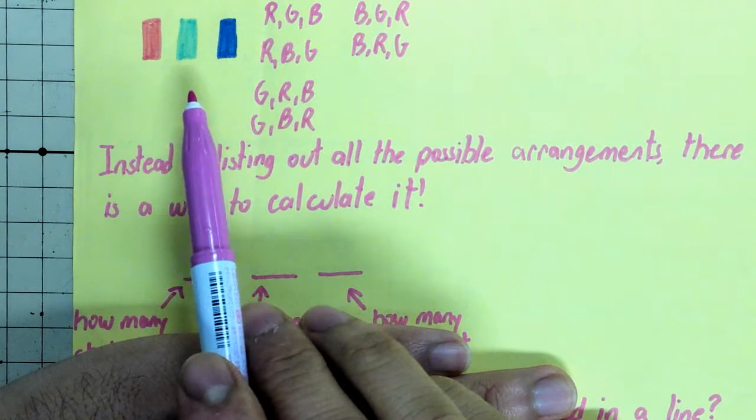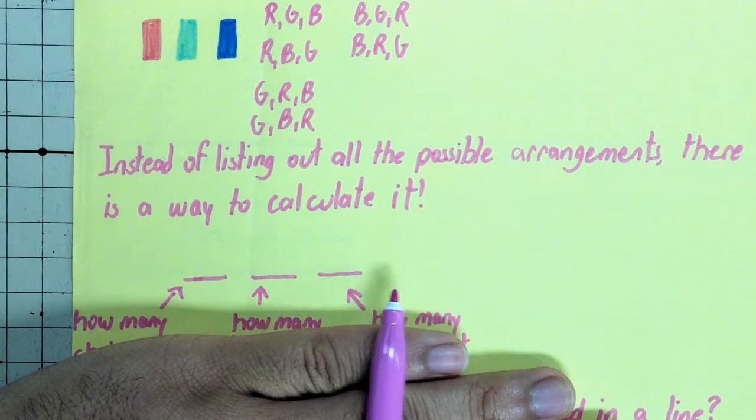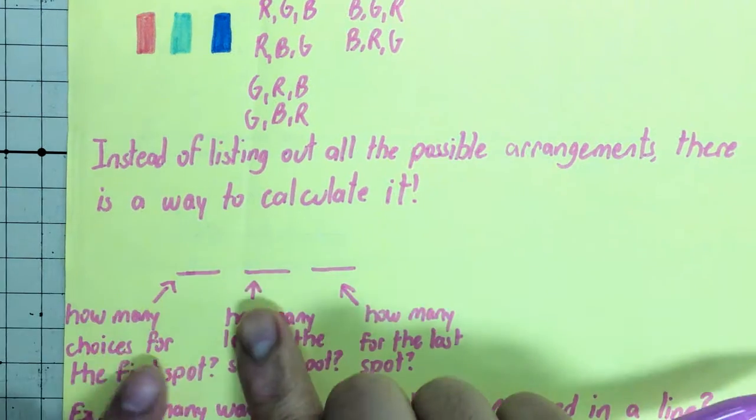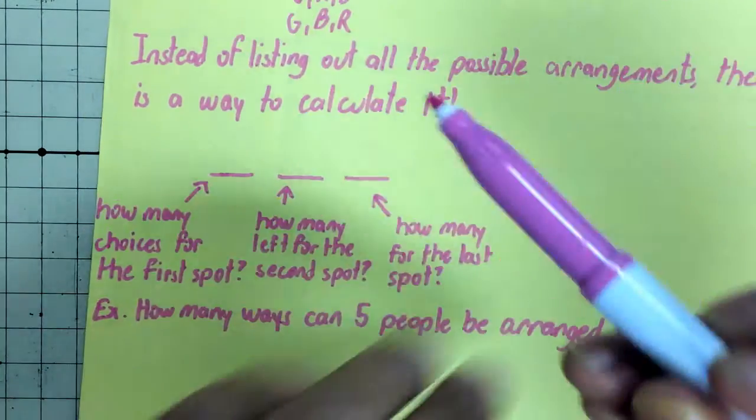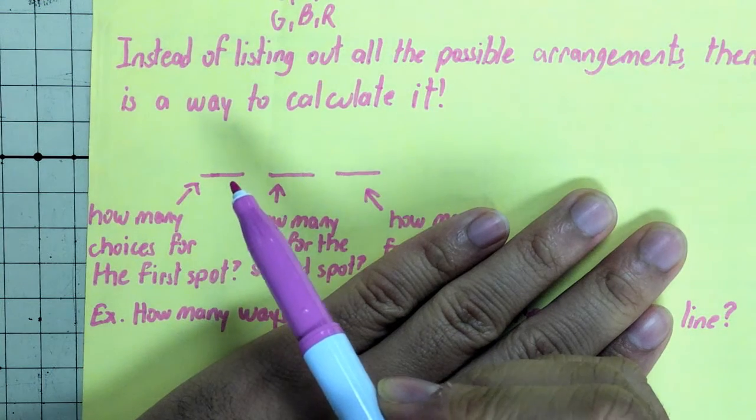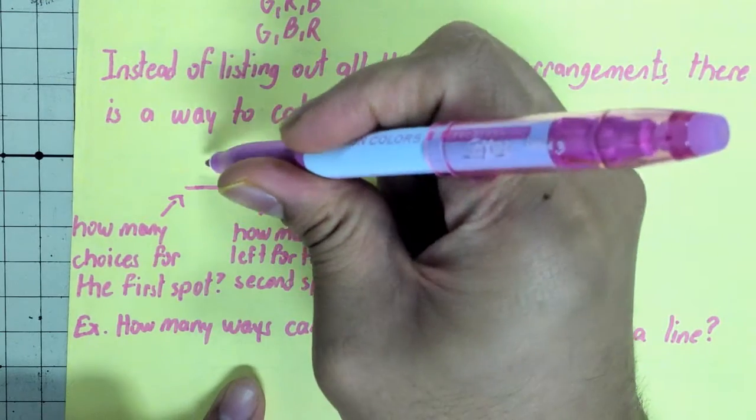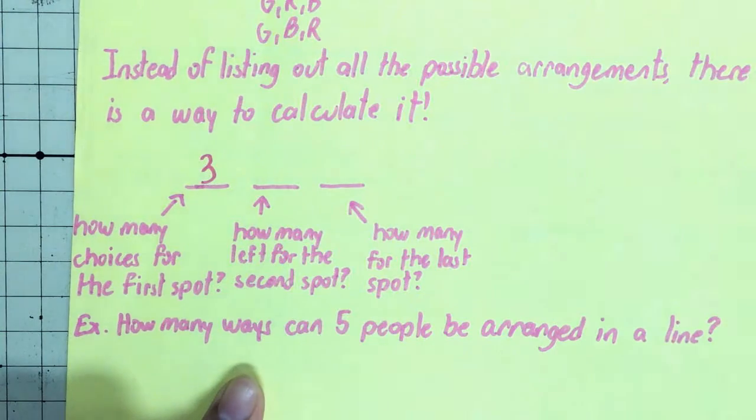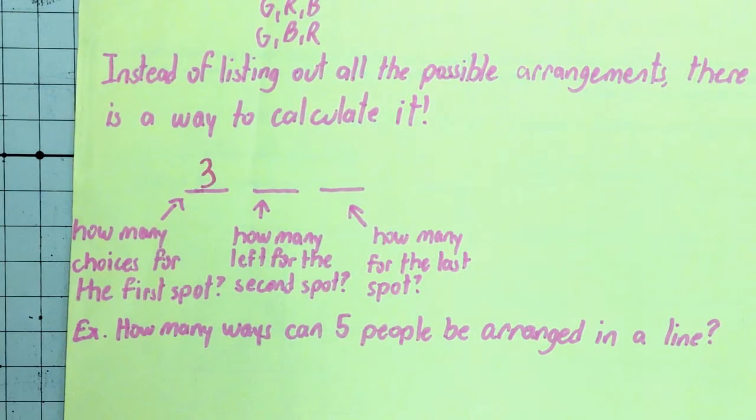So we have three markers that goes in three different spaces. In my first space, over here, how many choices can I pick for my first spot? So I have three markers. That means in my first space, I can pick one of the three of them. There's three to choose from.